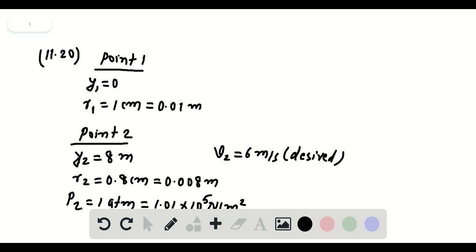So for point 1, Y1 is going to be equal to 0, R1 is given, which is 1 centimeter, equivalent to 0.01 meter.